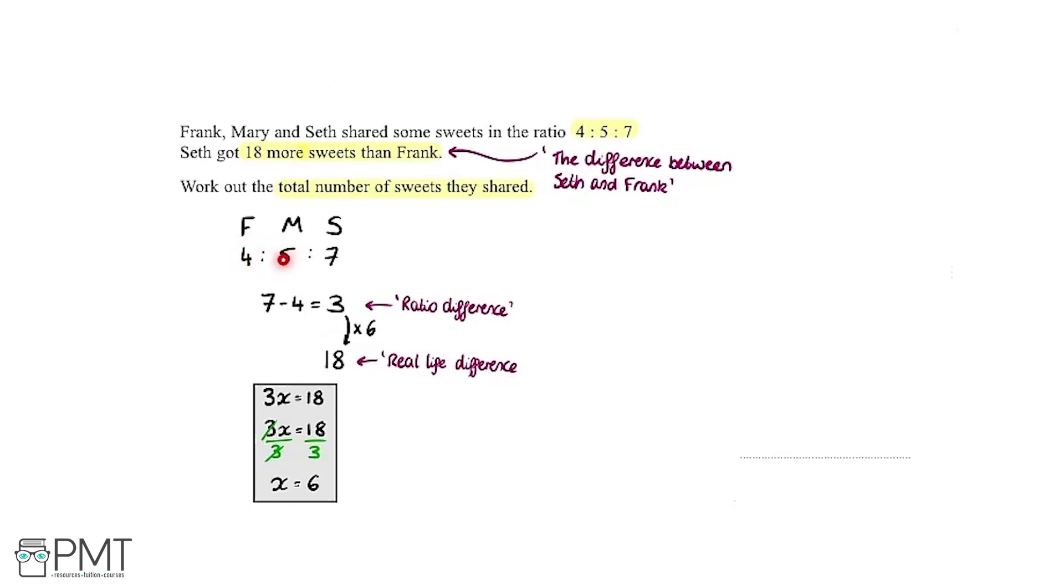In the ratio Frank's got 4, Mary's got 5, and Seth has 7. So in total we're going to have 4 plus 5 plus 7 which equals 16. I'm going to call this the ratio total. The question asks us to work out what the total number of sweets they shared are, so in real life what's the actual amount of sweets that they shared all together. We want to work out the real life total.